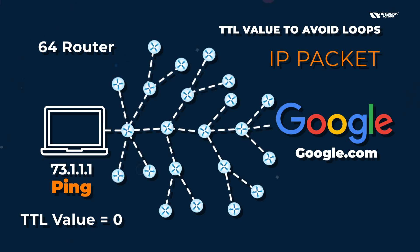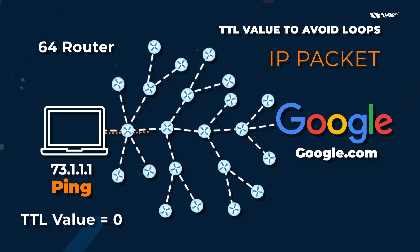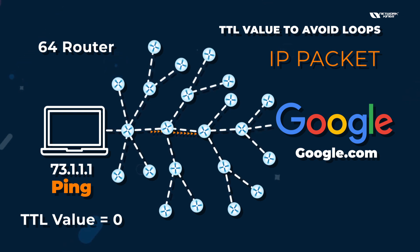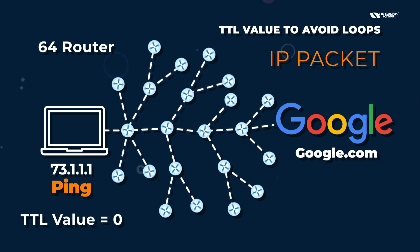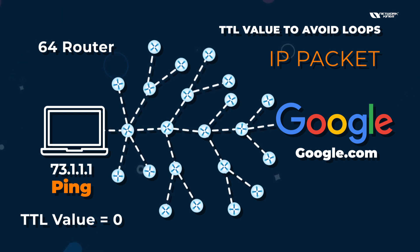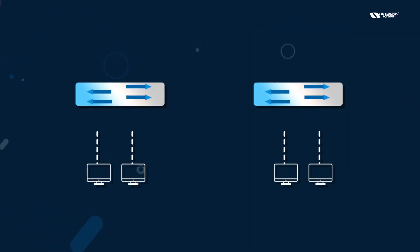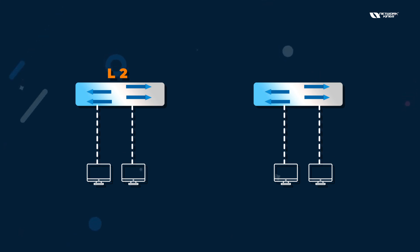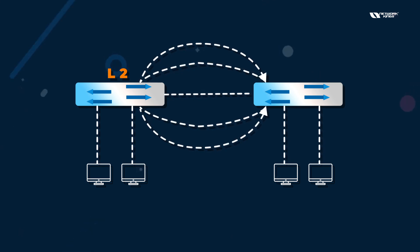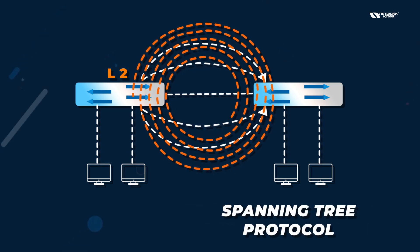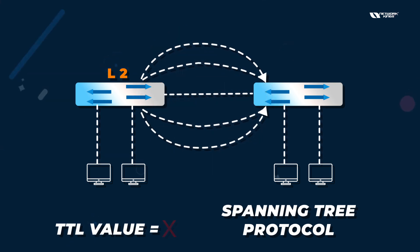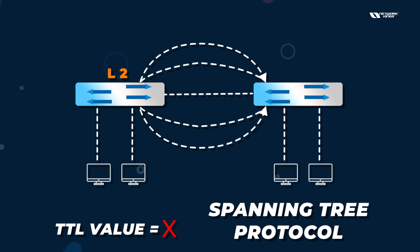In every packet sent outside your network, any IP packet has a TTL value so that you will not have a loop in internet or in your IP networks. Now let's talk about normal Ethernet. When we connect switches, layer 2 devices only understand layer 2 frames, so they broadcast. Ethernet frames do not have a TTL value, so the packet keeps rotating — this is why Spanning Tree Protocol was developed.